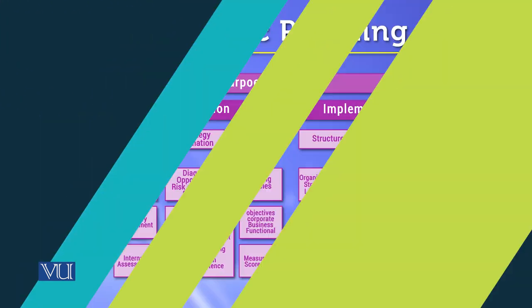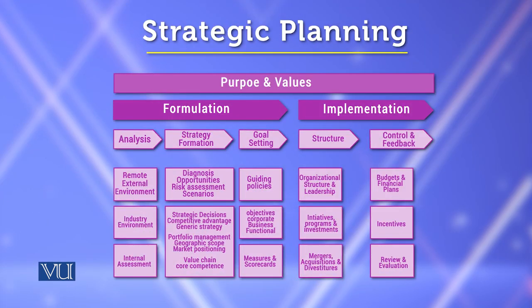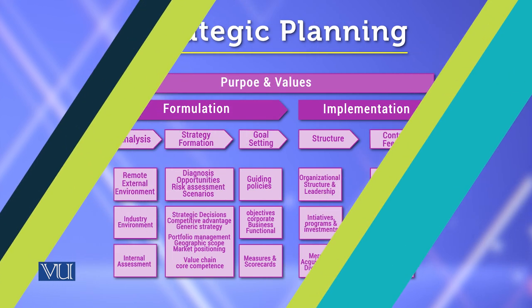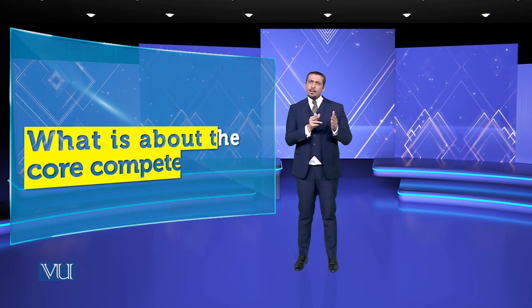If you talk about low cost leadership, then you will see the position of economies of scale. If you talk about differentiation, then it is economies of scope. Then strategy formulation involves the value chain and core competency — all of this is core competency.